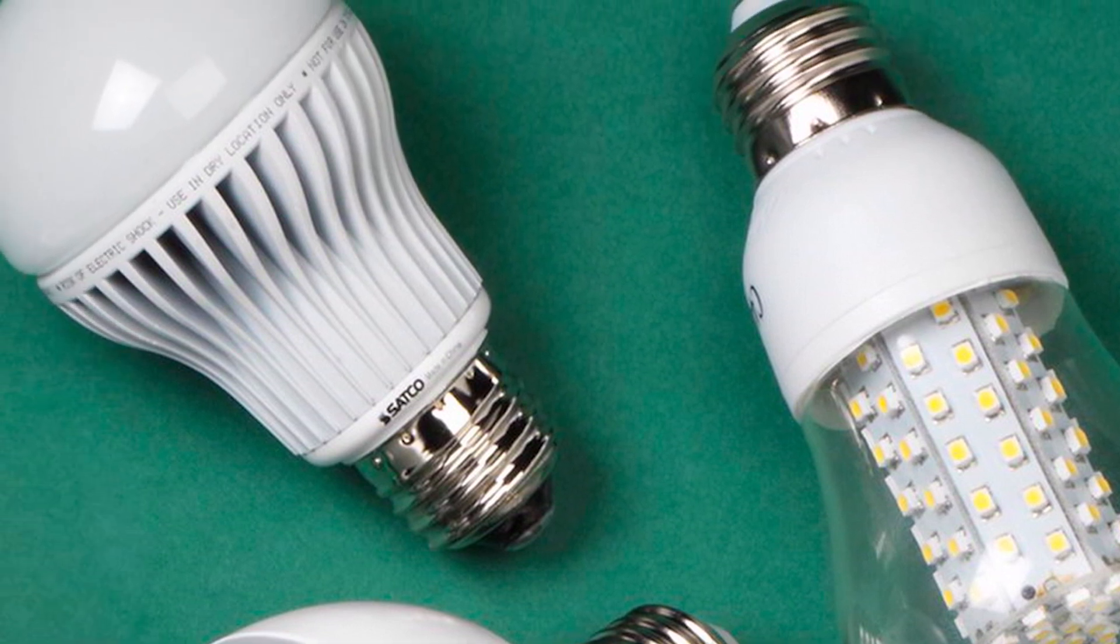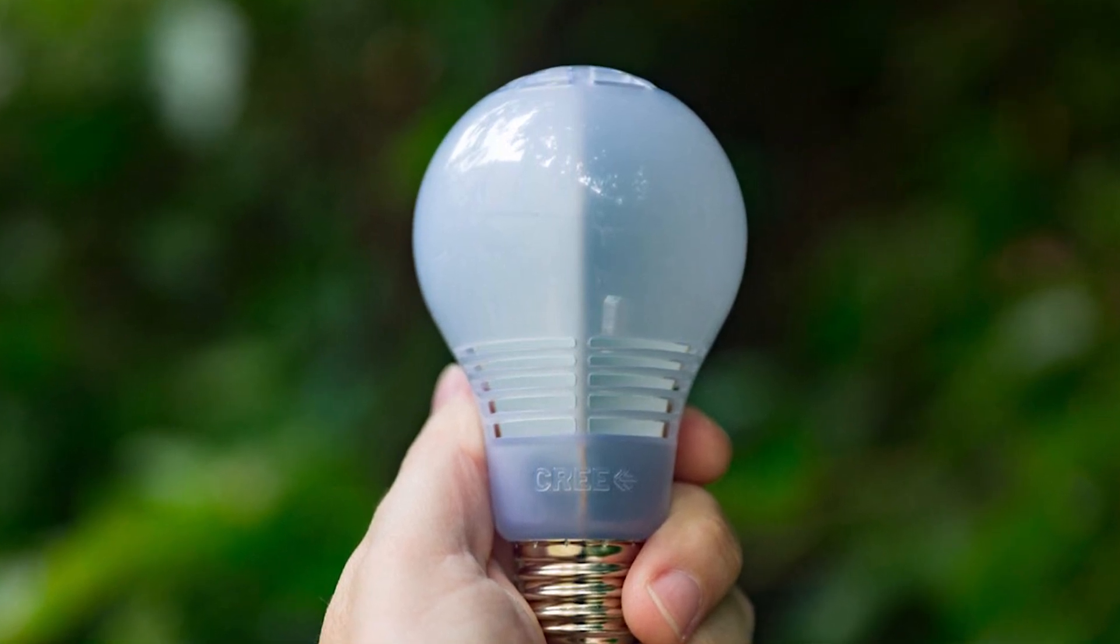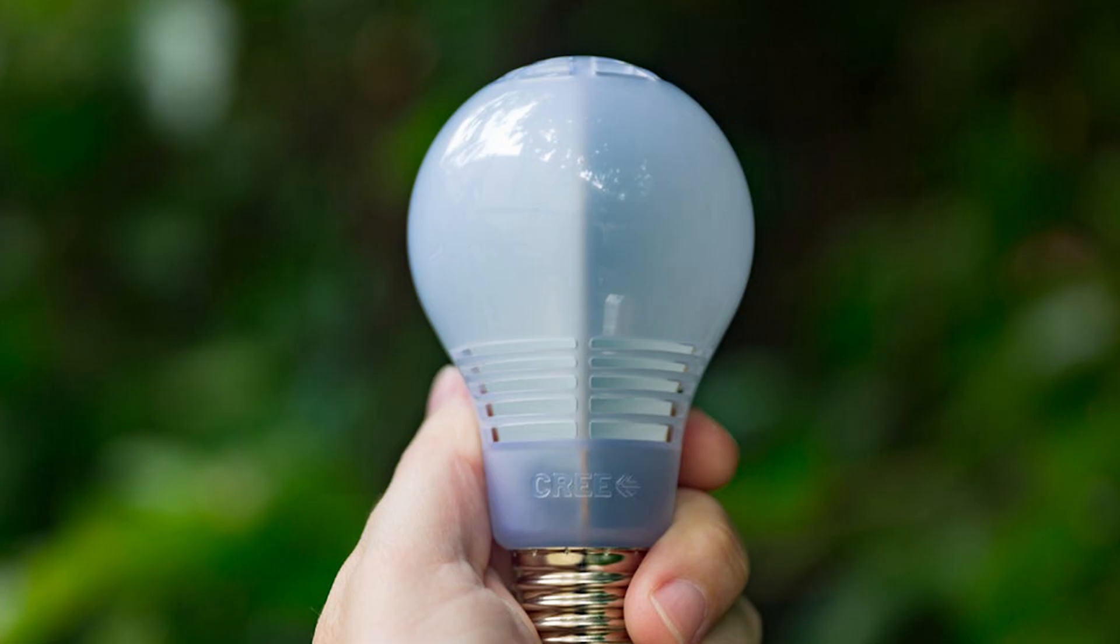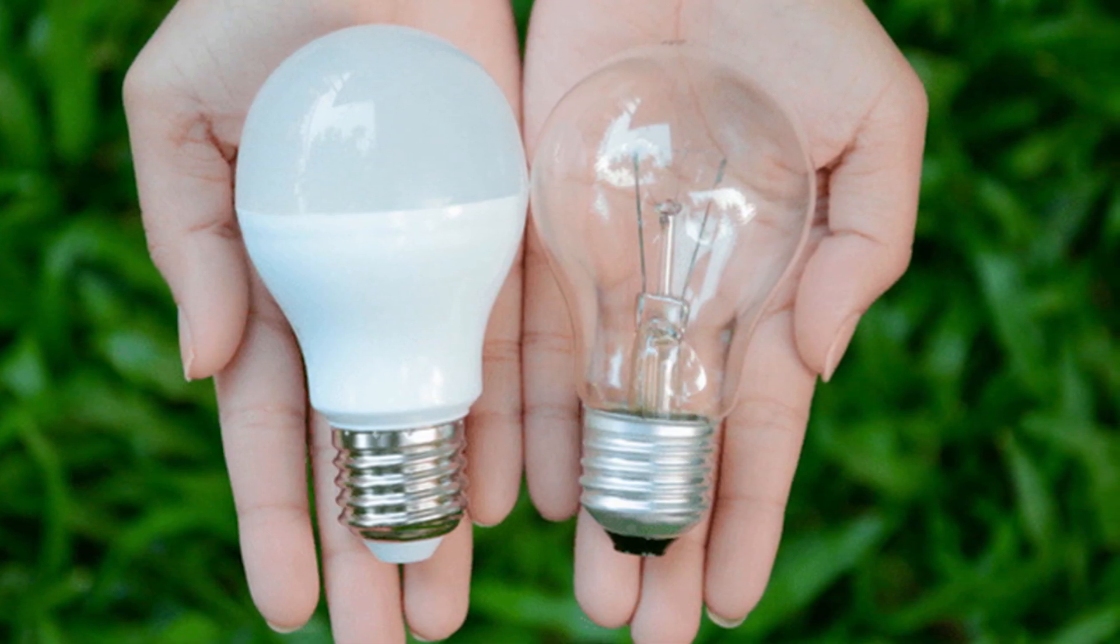That all said, the upfront cost of LED when compared to metal halide lights are actually fairly close. Both lights typically sell for around $10 to $30 per luminaire. Of course, this can change in both cases depending on the particular light in question.